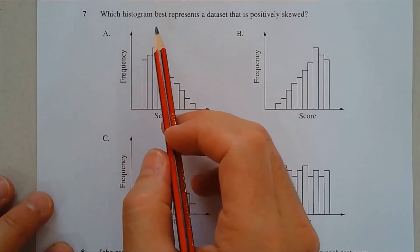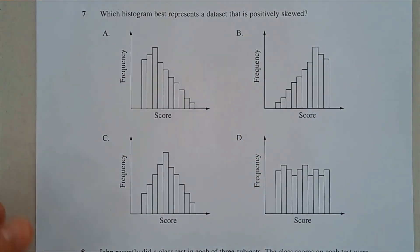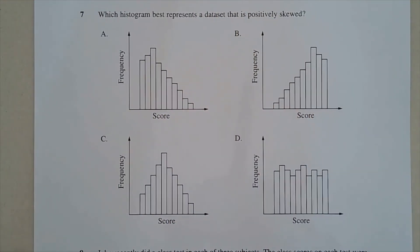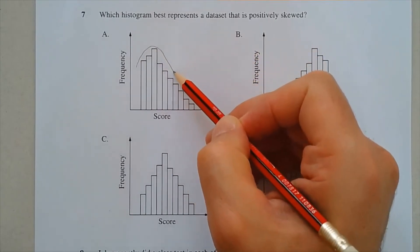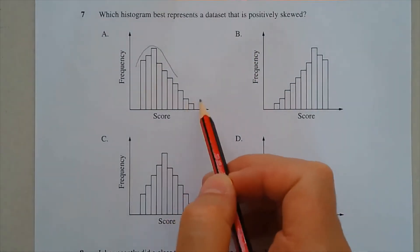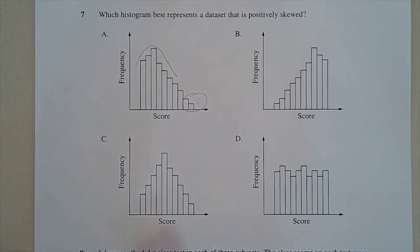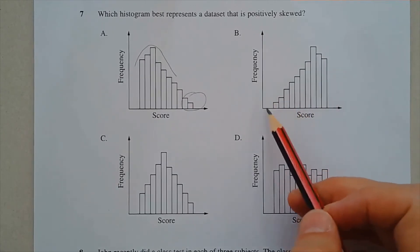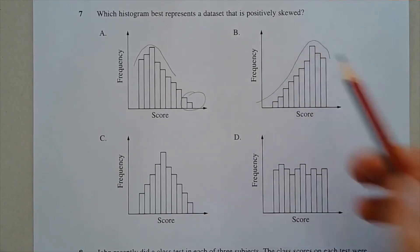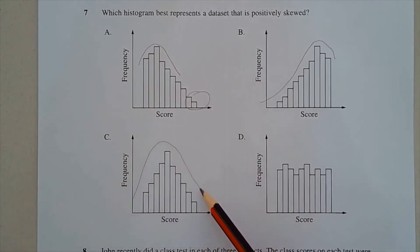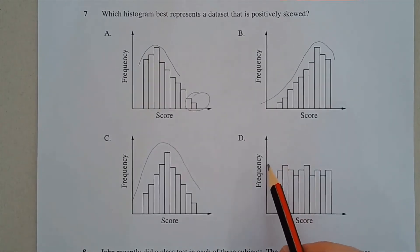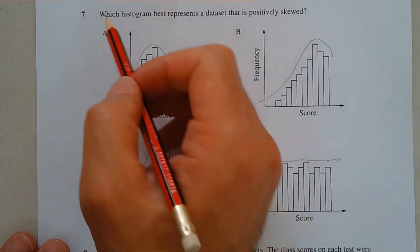Question 7. Which histogram best represents a data set that is positively skewed? Option A has the bulk of the distribution on the left with a tail on the right — that's positively skewed. Option B has the tail on the left, so that's negatively skewed. Option C is roughly symmetrical and option D is roughly uniform. The answer is option A.